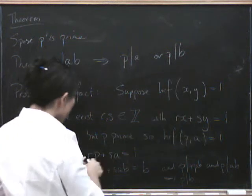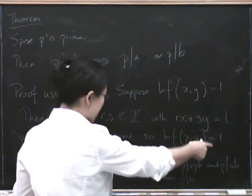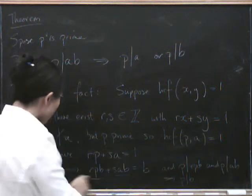So now we use this fact that we can definitely find r and s, such that rp plus sa equals 1.